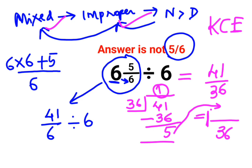And whatever is your remainder becomes your numerator. So this becomes 1, 5 by 36 as the mixed fraction representation of 41 upon 36.